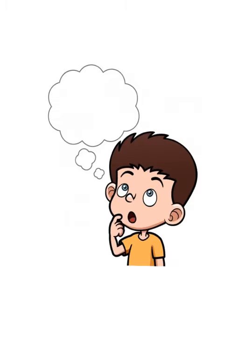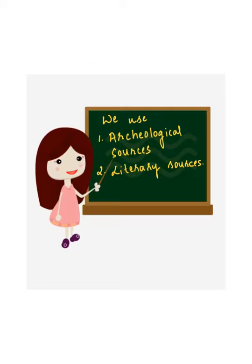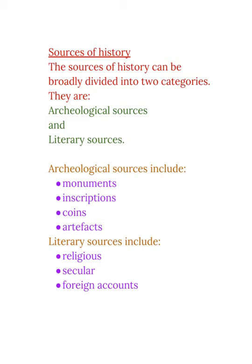In the last session we learned that in history we study about early societies and how societies and cultures have evolved over time. But how do we study the past? We use archaeological sources and literary sources. The sources of history can be broadly divided into two categories: archaeological sources and literary sources.